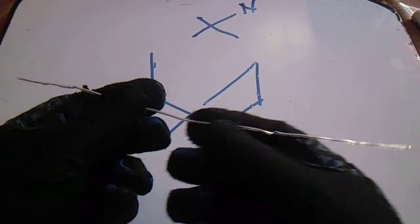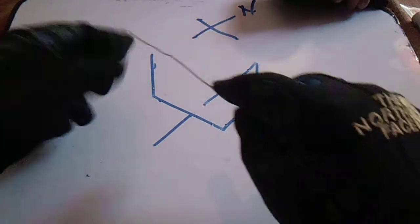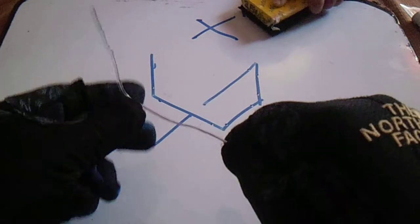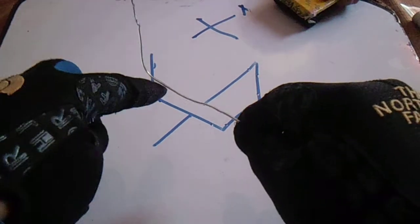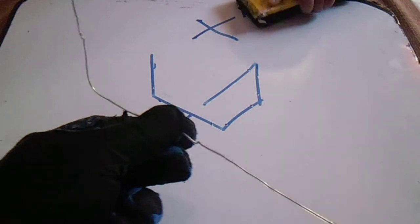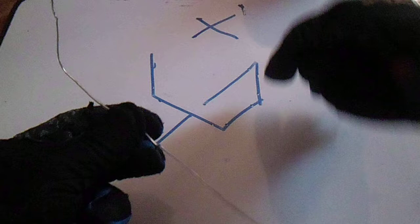This is very simple. This is our first - we have line one and we have line two. Line two is going to north. This is our north, like this, north.